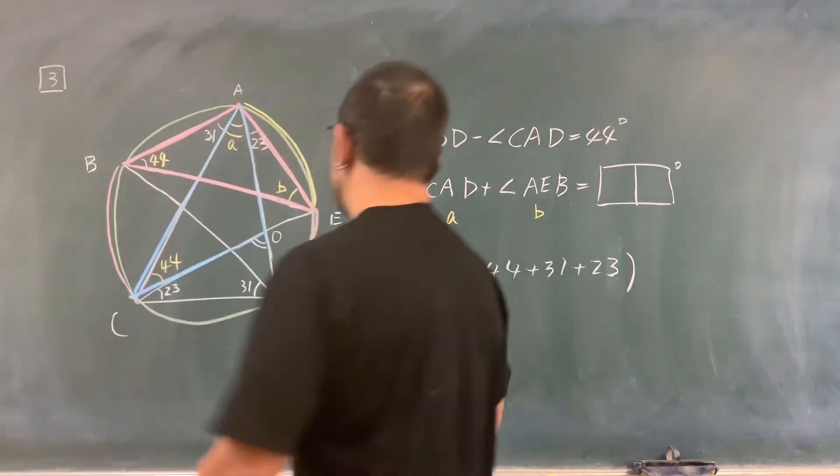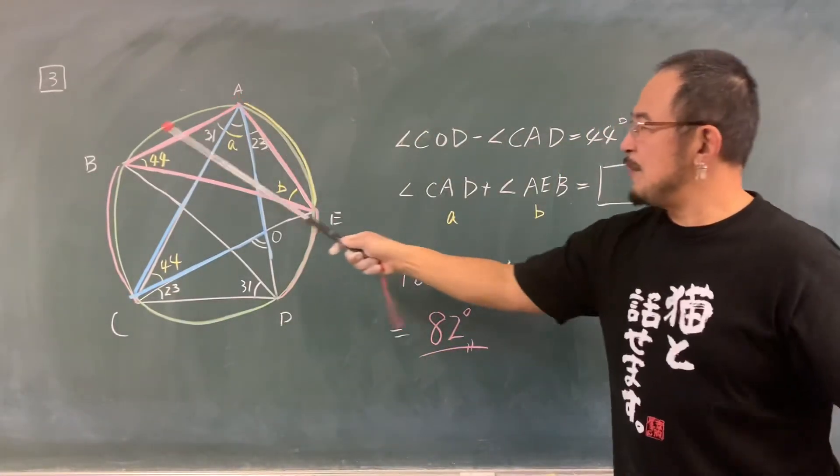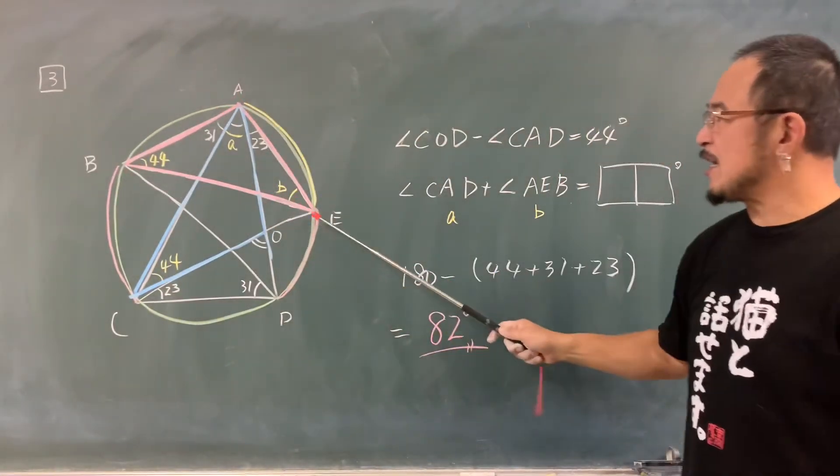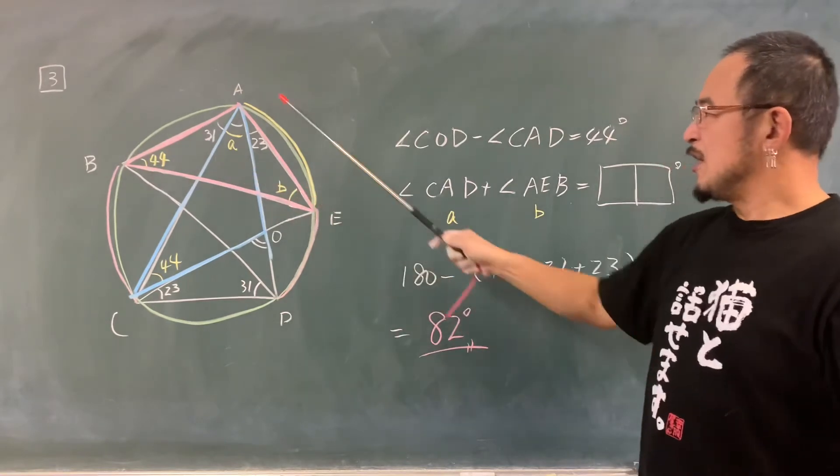この44ですが、この弧に対する円周角ですね。同じ弧に対する円周角は、やはりここも44度となります。そうすると、AとBの合計は何度ですかと。こういった問題は、Aは何度、Bは何度というふうに出しにいかないということですね。三角形A、B、Eの内角の和は180度です。